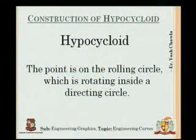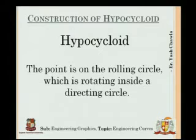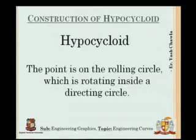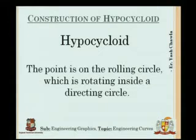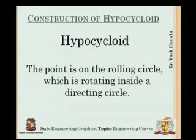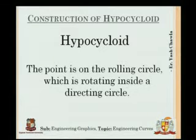For a hypocycloid, the rolling circle would be inside the directing circle. If you remember, in epicycloid, the rolling circle was outside the directing circle and the point was on the circle. Here, the difference is that in epicycloid it was outside, and in hypocycloid it is inside the directing circle.